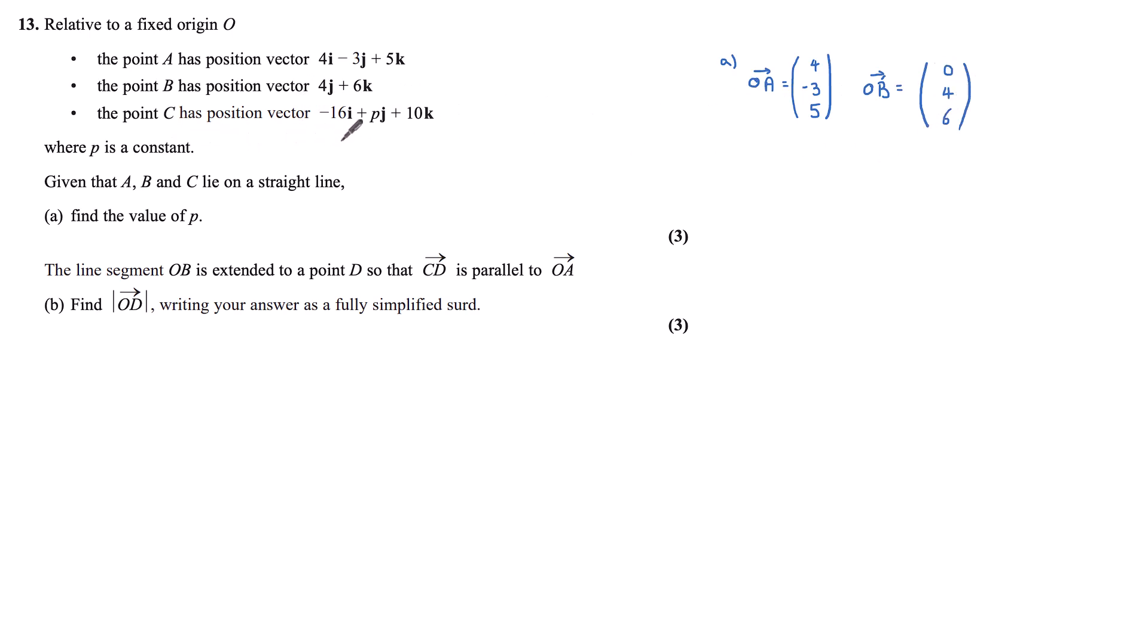And the same for point C: (-16, p, 10). The reason I like column notation is I find it a bit easier than when written out in terms of i, j, and k.